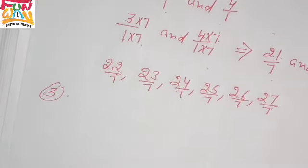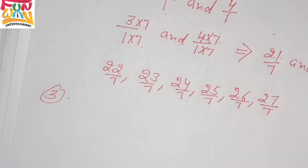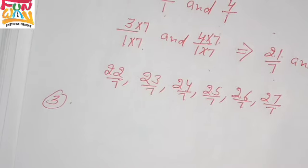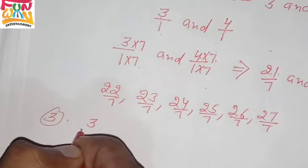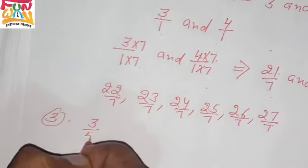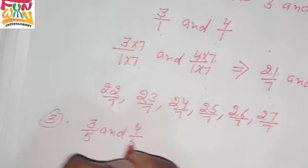Moving to question number 3. The third question is similar. We need to find rational numbers between 3 over 5 and 4 over 5.